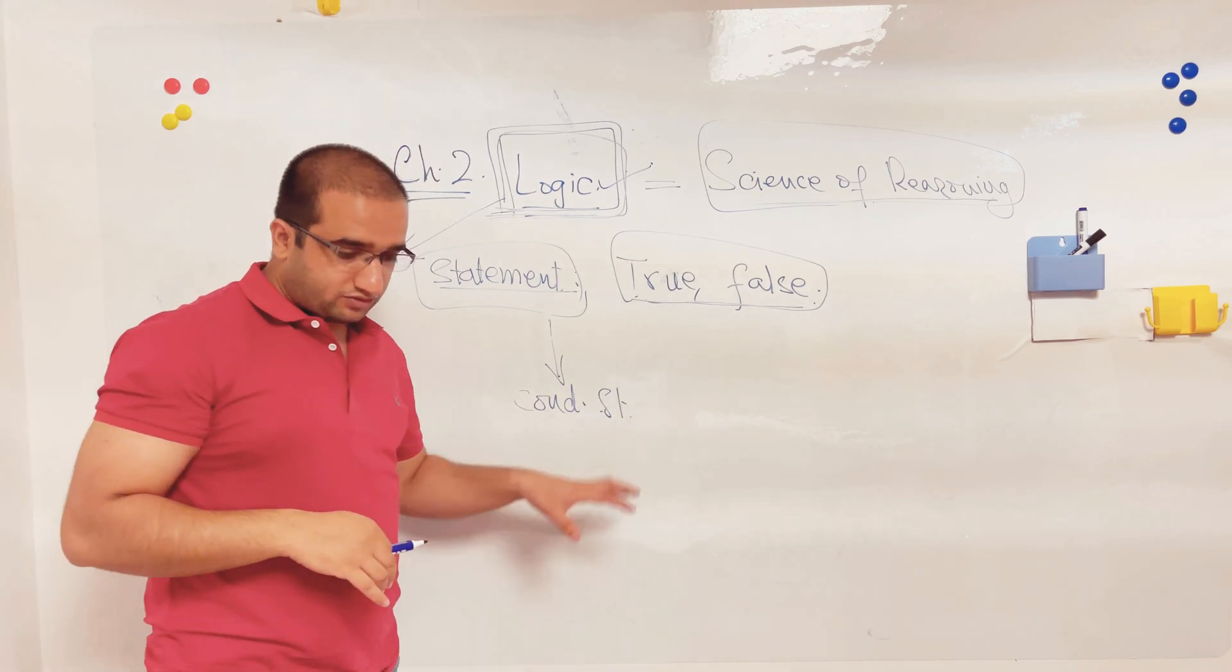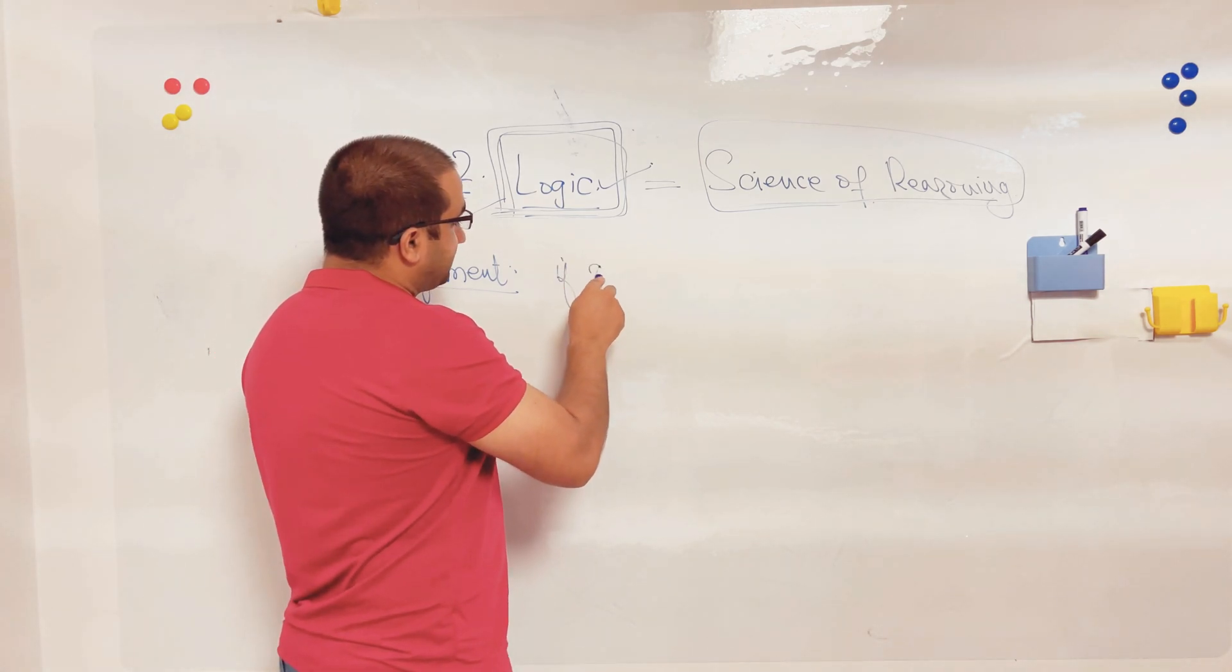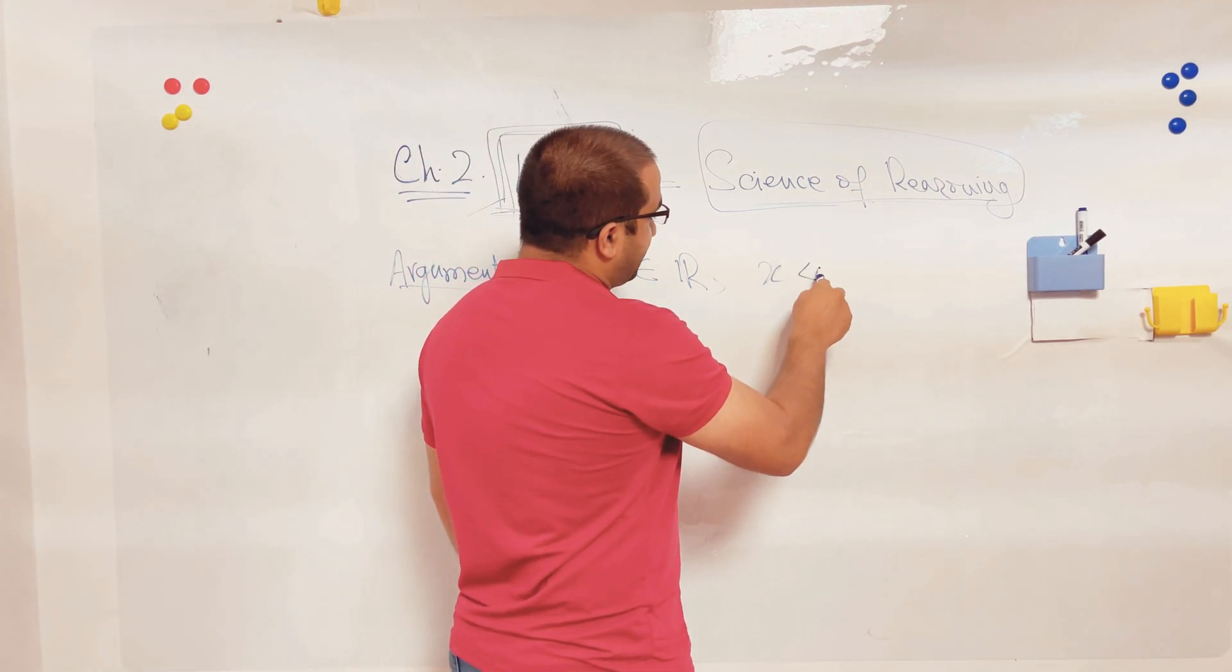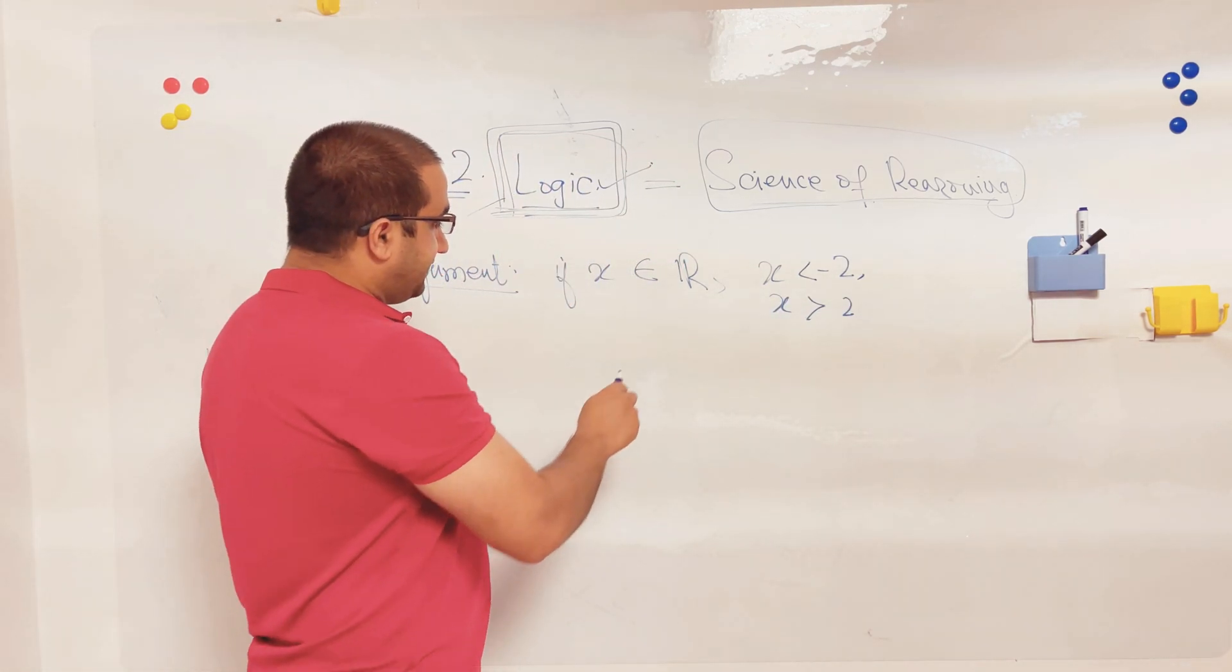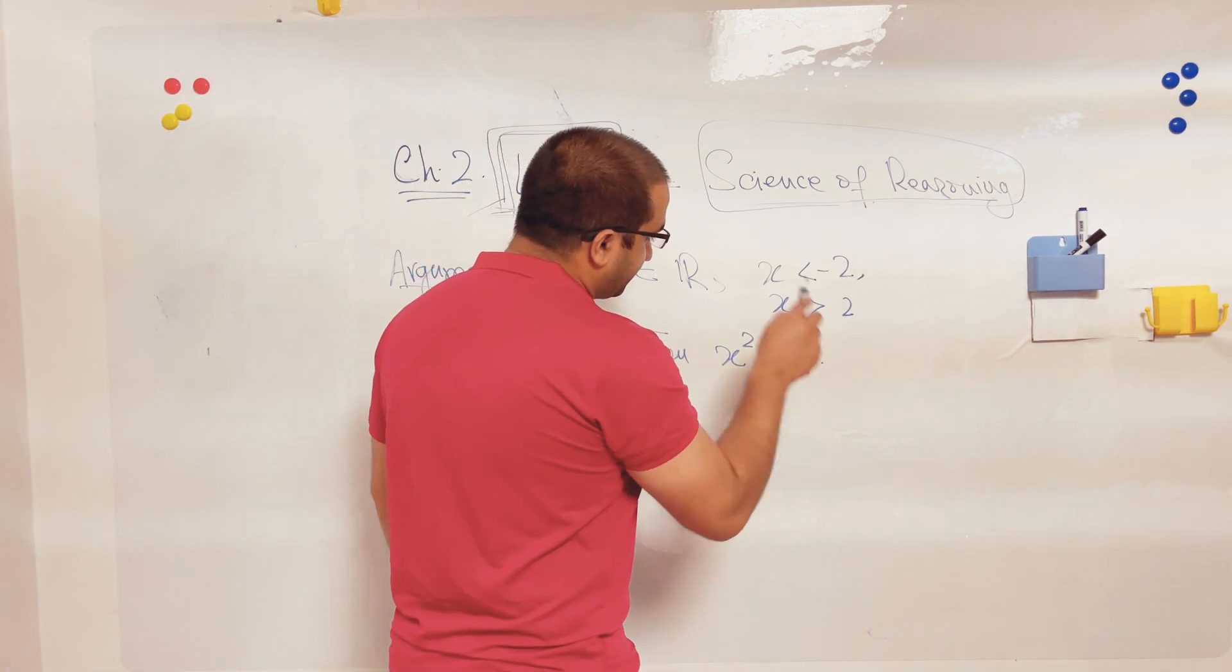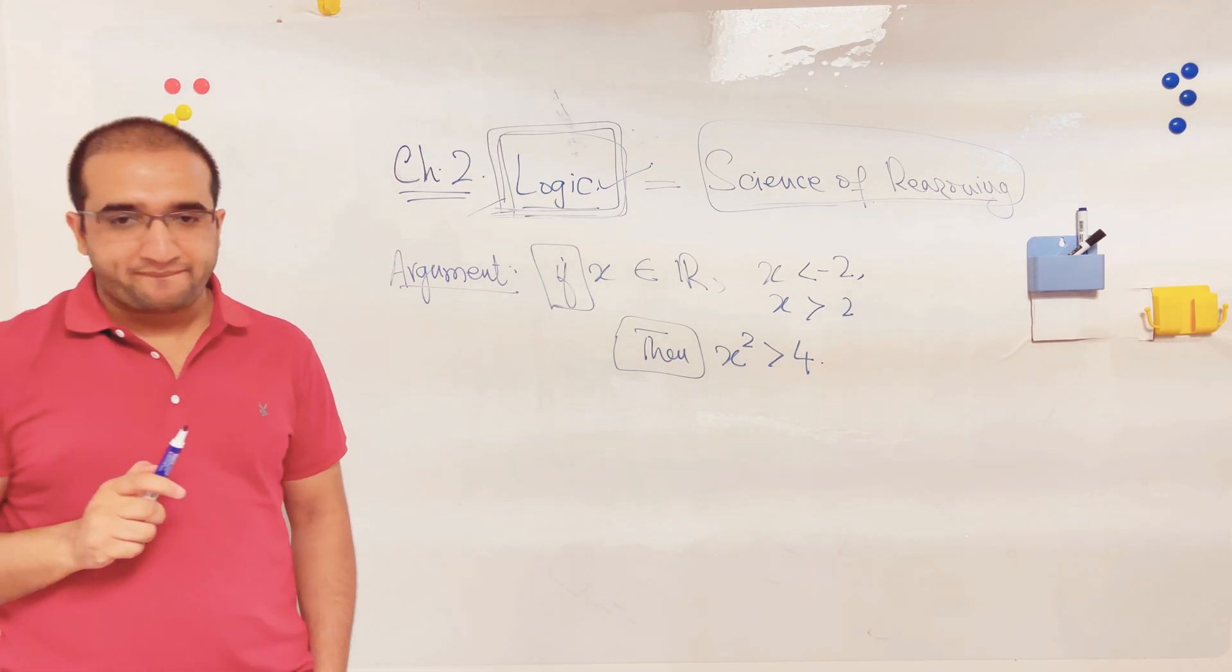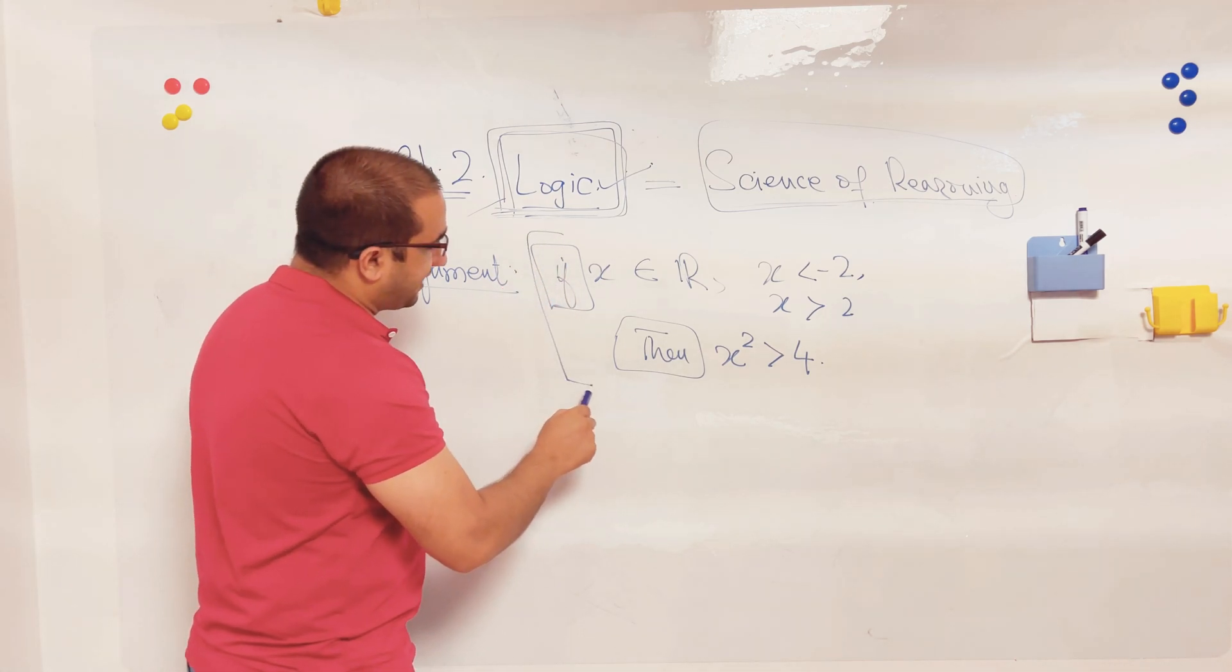Let me make an argument. I'm saying x is a real number. If x belongs to the set where either x is less than negative 2 or x is greater than 2, then x squared will always be greater than 4. Are you familiar with this kind of statement?